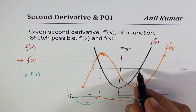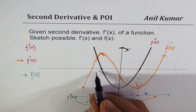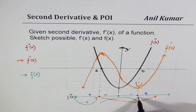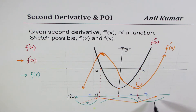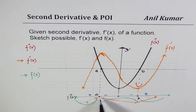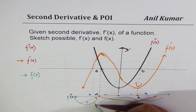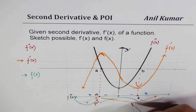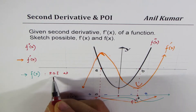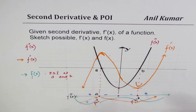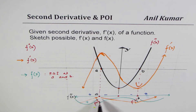Let's label points a and b. Beyond point a, the second derivative is again positive, so f(x) will be concave up. The concavity changes at these points, so we are expecting points of inflection at a and b on the graph. At a and b, the concavity is changing.